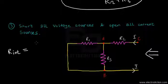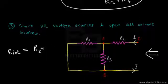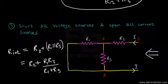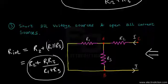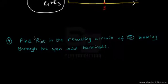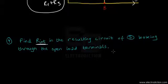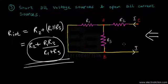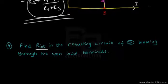Step four: find R_int, the internal resistance looking through the open load terminals. This is the same as the Thevenin resistance. With V_S shorted, the internal resistance is R2 in series with R1 and R3 in parallel, giving R_int = R2 + (R1·R3)/(R1 + R3).